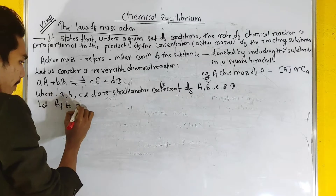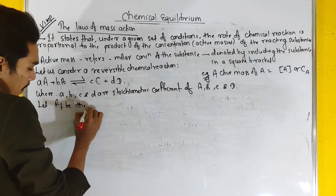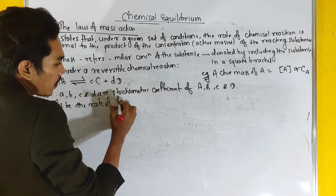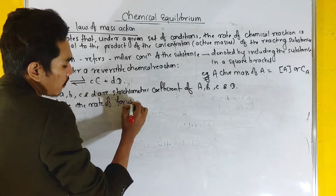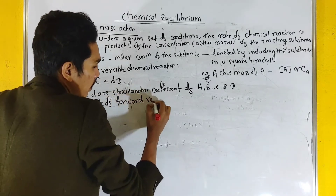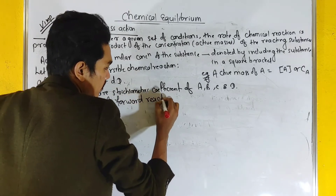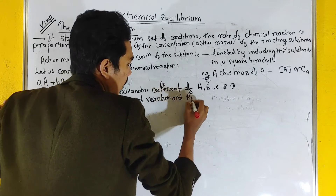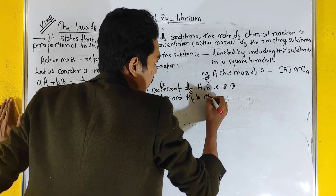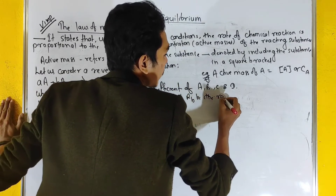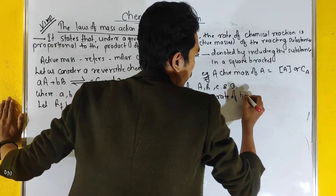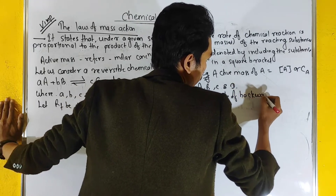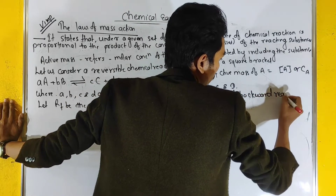Let R_F be the rate of the forward reaction and R_B be the rate of the backward reaction.